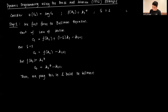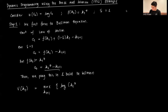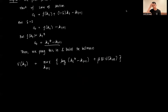Our Bellman is: V(k_t) = max_{k_{t+1}} { log(c_t) + β·E[V(k_{t+1})] }, where c_t = k_t^θ − k_{t+1}. So the full Bellman equation is V(k_t) = max_{k_{t+1}} { log(k_t^θ − k_{t+1}) + β·E[V(k_{t+1})] }.